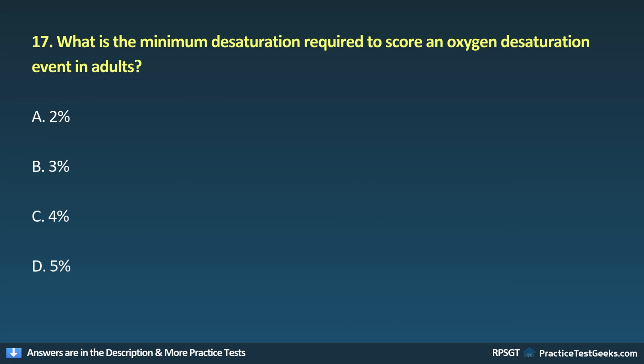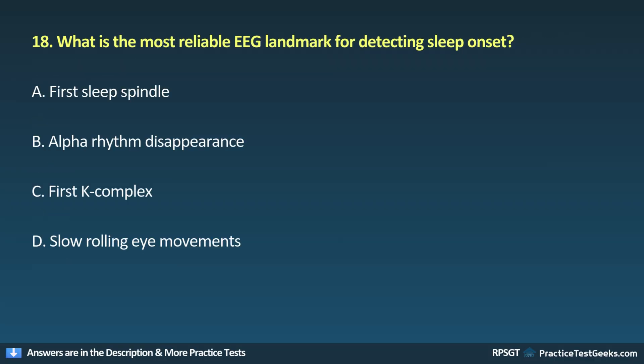Question 17: What is the minimum desaturation required to score an oxygen desaturation event in adults? A. 2%, B. 3%, C. 4%, D. 5%.